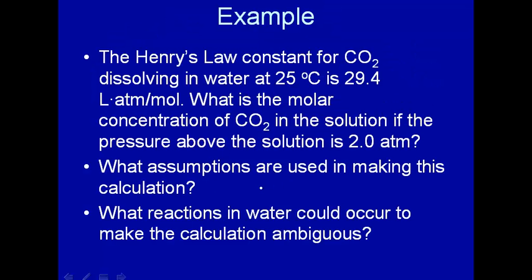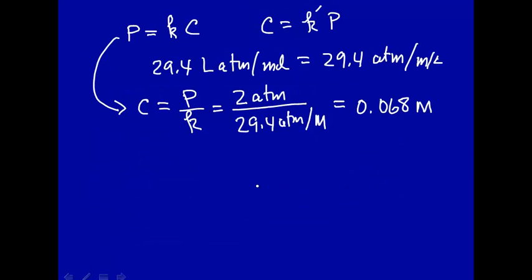Now what assumptions are used in making this calculation? Well, we're assuming we're at Henry's Law. And recall that if we look at the partial pressure as a function of mole fraction of some component, here we're going from 0 to 1, and in general for gases we have non-ideal behavior. So let's say we have something like this.